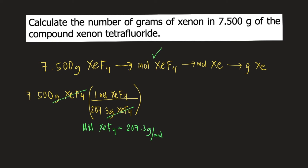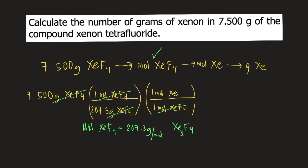Next, convert moles of xenon tetrafluoride into moles of xenon. Checking the formula XeF₄, there is 1 xenon and 4 fluorine, so 1 mole of xenon tetrafluoride contains 1 mole of xenon. We put 1 mole of xenon tetrafluoride on the bottom and 1 mole of xenon on top, so moles of xenon tetrafluoride cancel and now we have moles of xenon.